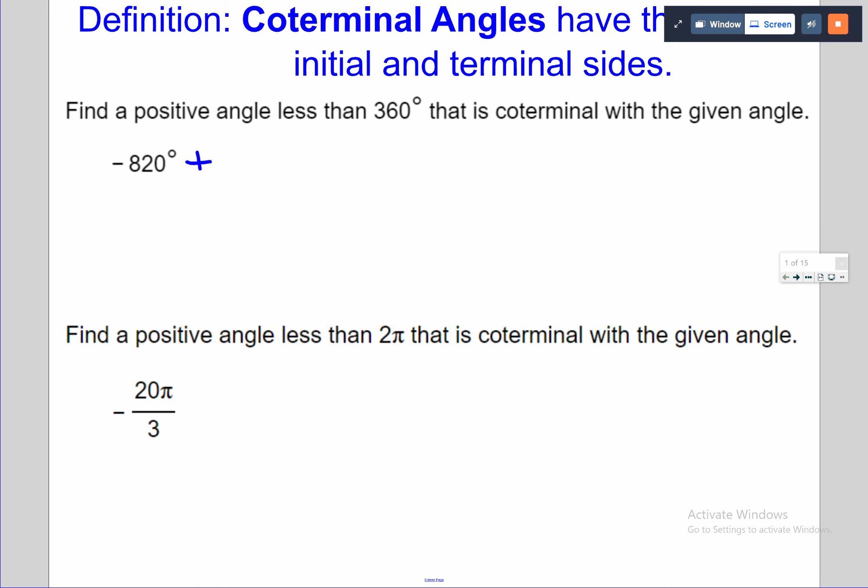If I add 360 once, it's still going to be negative. Add 360 again, it's still going to be negative. I think we've got to add it on three times here to get a positive angle that's less than 360. So if I add 720, that's negative 100. 260 is what we're looking for here. If it's in degrees, we're just adding or subtracting 360.